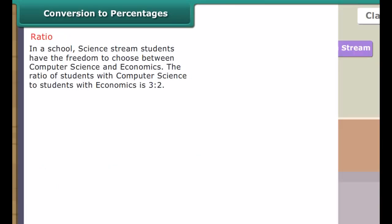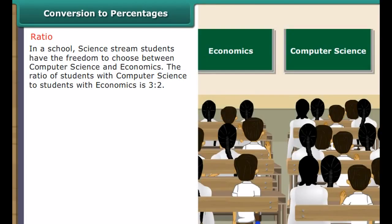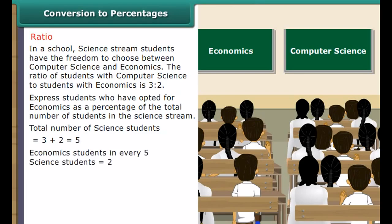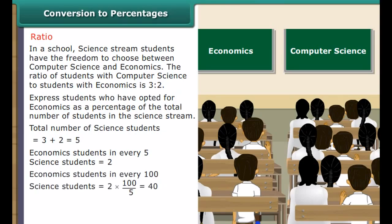Ratios. In a school, science stream students have the freedom to choose between computer science and economics. The ratio of students with computer science to students with economics is 3 to 2. Total science students equals 3 plus 2, which equals 5. Economics students in every 5 equals 2, so in every 100 equals 2/5 into 100, which equals 40. Therefore, 40% of the science students have opted for economics.